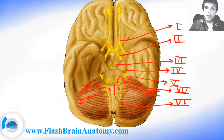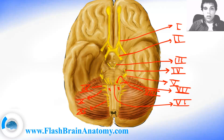Then comes the accessory nerve, which is nerve number 11. It controls the sternocleidomastoid and trapezius muscles and overlaps with the functions of the vagus nerve.